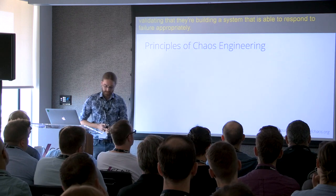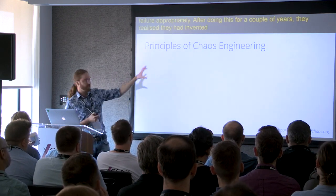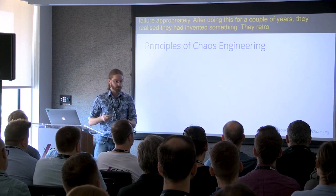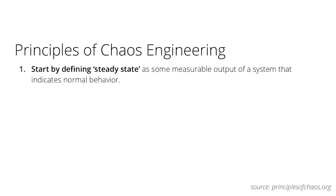After doing this for a couple of years, they realized they had invented something and retroactively called it chaos engineering. The first of their tools was called Chaos Monkey, and they retroactively came up with these principles of chaos engineering. You can find them at principlesofchaos.org. The first thing you want to do is define a steady state—some measurable output of your system that indicates normal behavior. That's their error count that was in the center of the screen earlier.